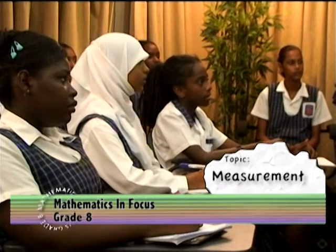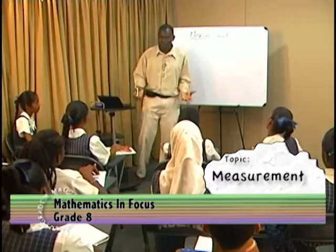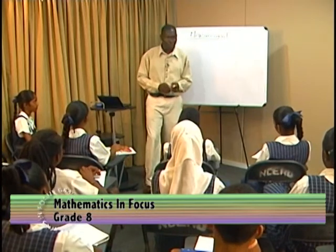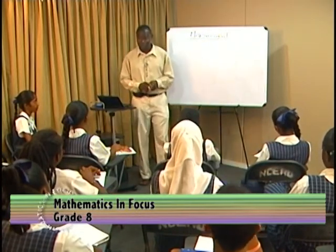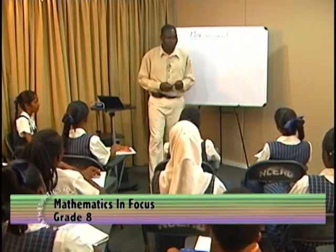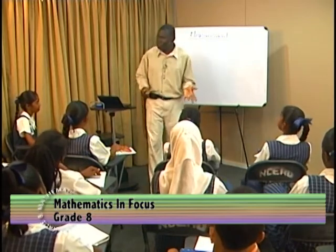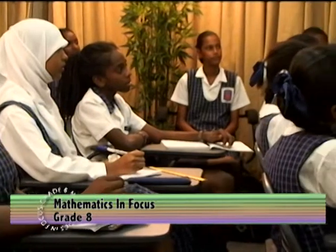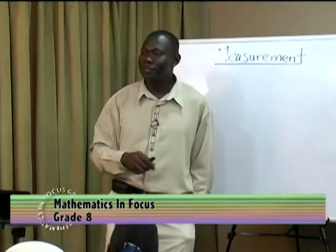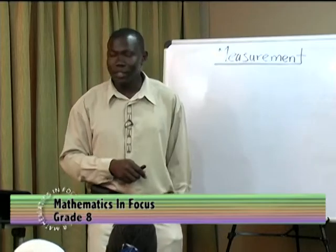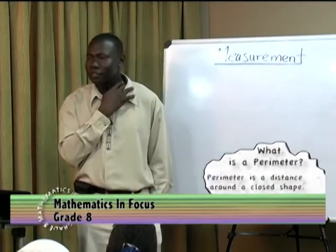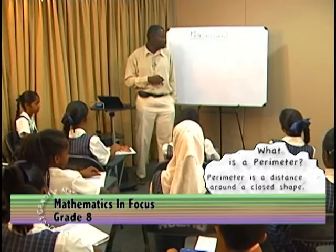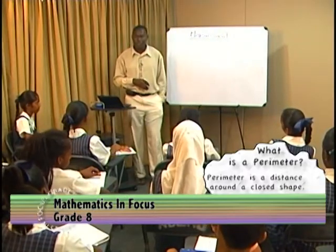Now, of course, measurement is broken up into other small topics. And the main topic which we will be looking at today is called perimeter. What is it called? Perimeter. You ever hear the word before, right? Yes, sir. So, tell me something about perimeter. Somebody, who's going to tell me? Perimeter is a distance around a closed shape. Go at that again. Perimeter is a distance around a closed shape.